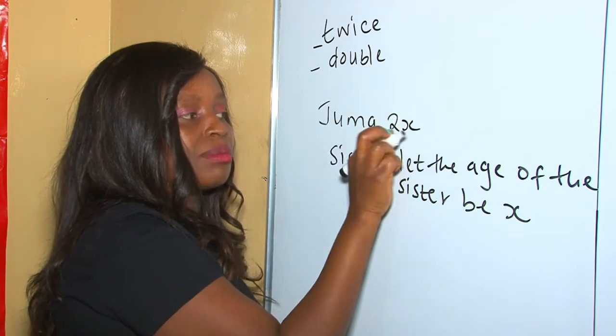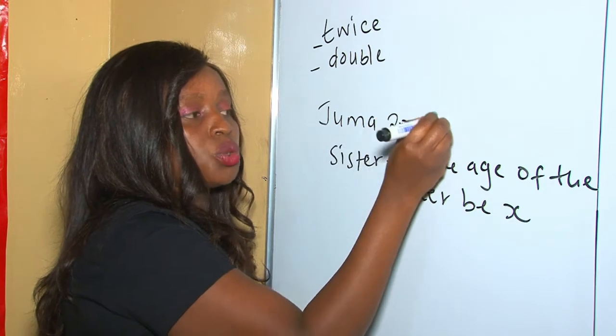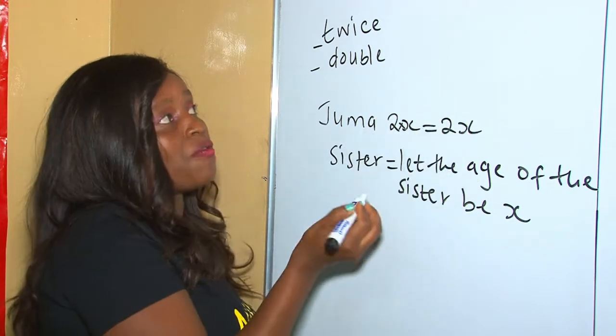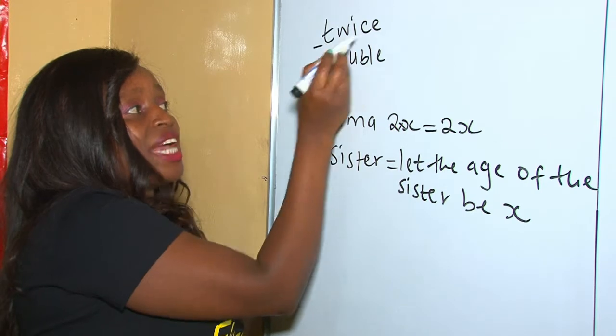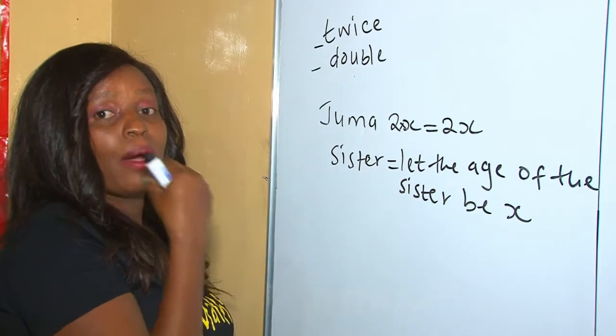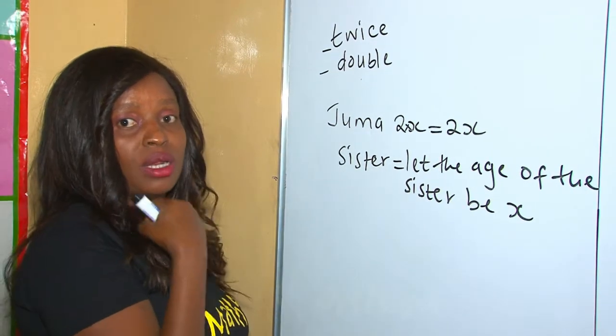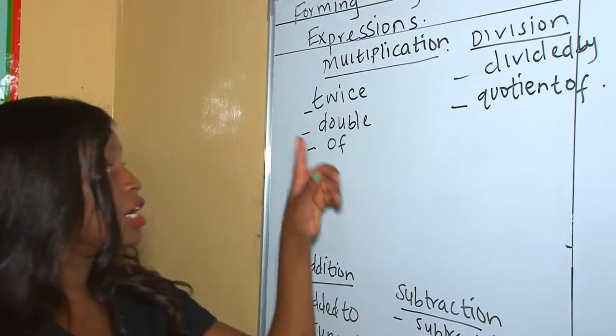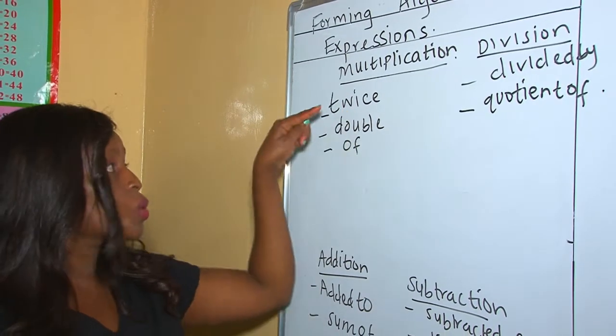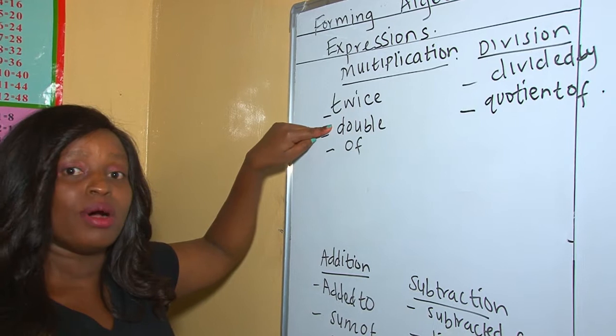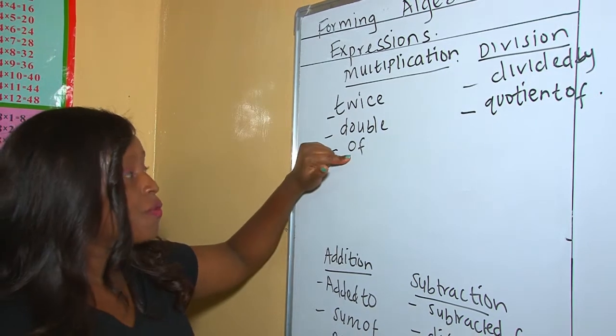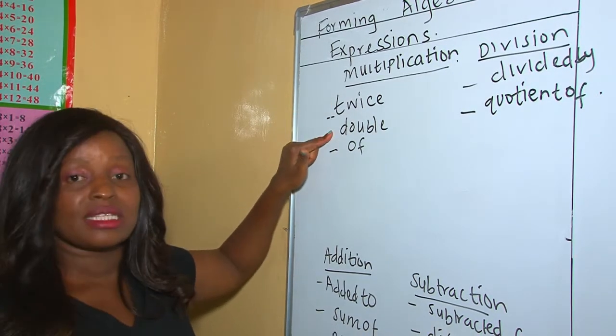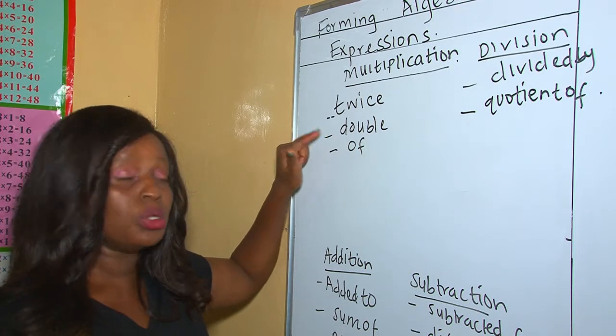When the sister is x, Juma is twice the sister. Twice means you multiply by two, so two times x, twice x, or two times x is equals to 2x. Therefore, if you come across the word twice and double, it means you are multiplying the unknown. These three phrases mainly direct you to multiplication.